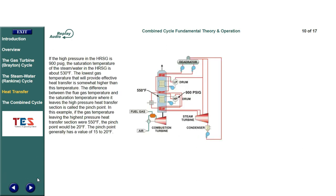If the high pressure in the HRSG is 900 PSIG, the saturation temperature of the steam and water in the HRSG is about 530 degrees Fahrenheit. The lowest gas temperature that will provide effective heat transfer is somewhat higher than this. The difference between the flue gas temperature and the saturation temperature where it leaves the high pressure heat transfer section is called the pinch point. In this example, if the gas temperature leaving the highest pressure heat transfer section were 550 degrees Fahrenheit, the pinch point would be 20 degrees Fahrenheit. The pinch point generally has a value of 15 to 20 degrees Fahrenheit.